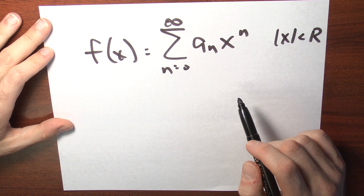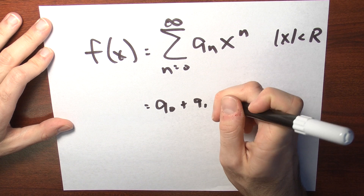In other words, f of x is equal to a sub 0 plus a sub 1 times x plus a sub 2 times x squared, and so on. In this case, I can figure out what the coefficients — the a sub n's — must be equal to in terms of the function f.